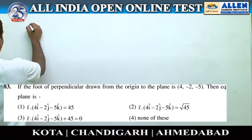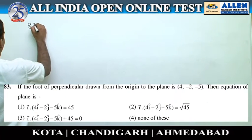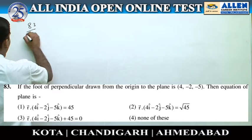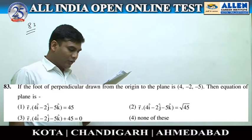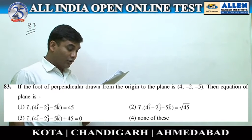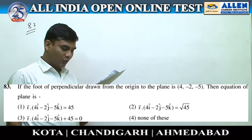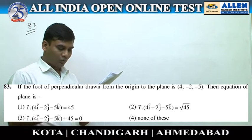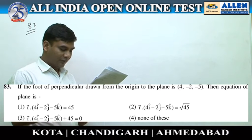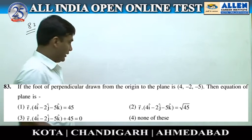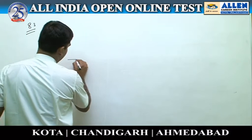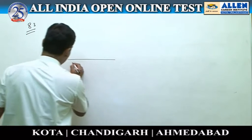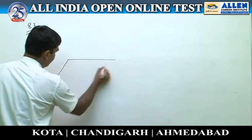Question number 83: If the foot of the perpendicular drawn from the origin to the plane is (4, −2, −5), then find the equation of the plane. Suppose this is the plane.